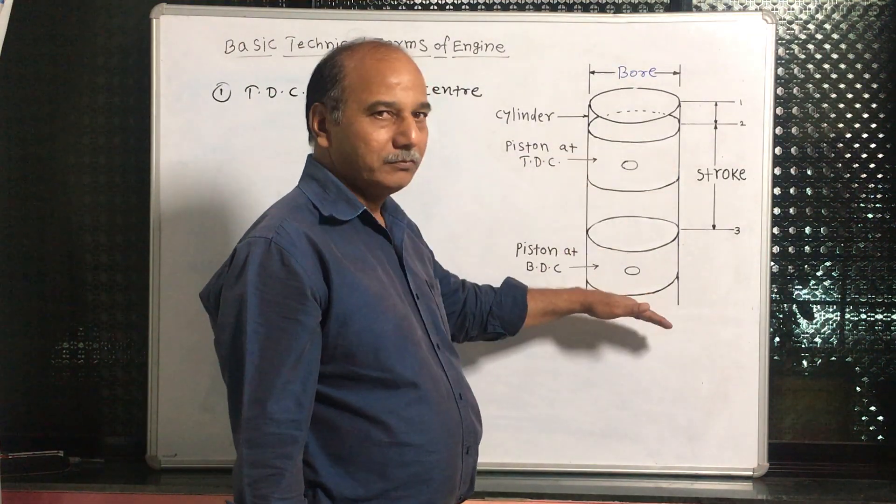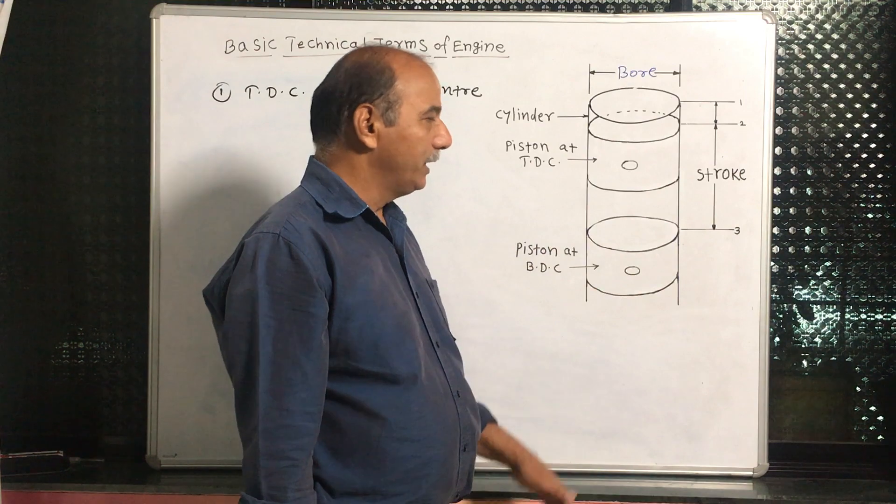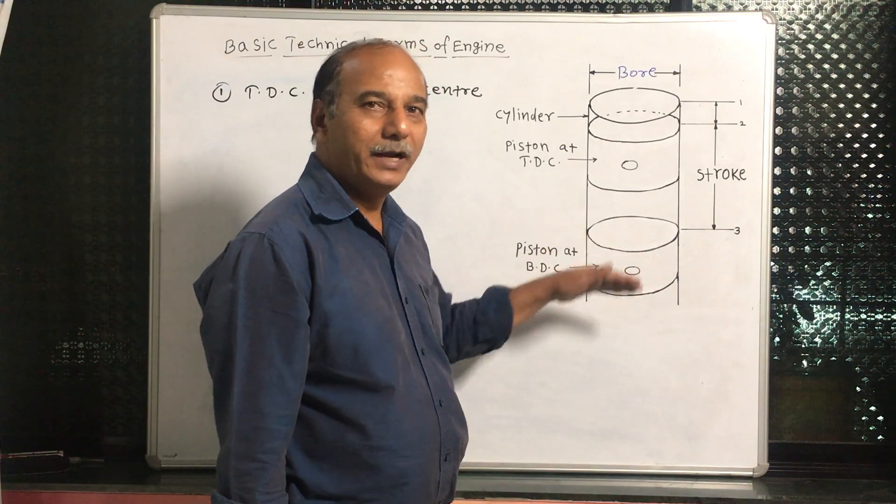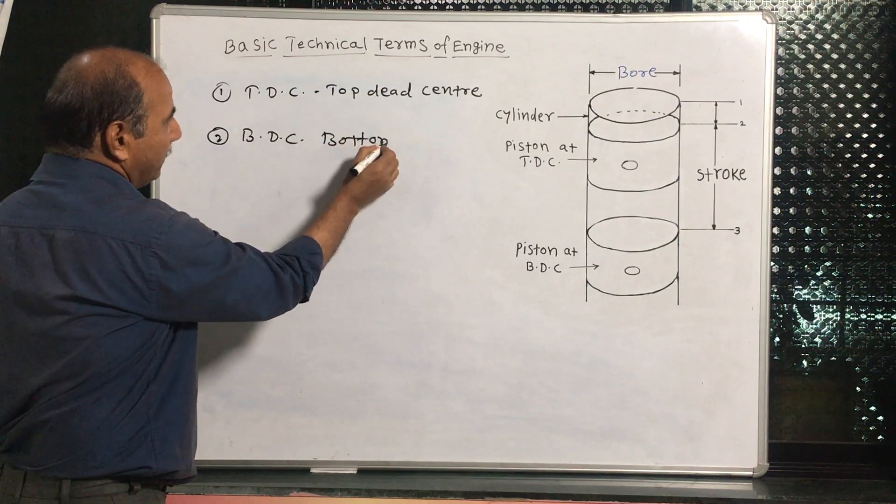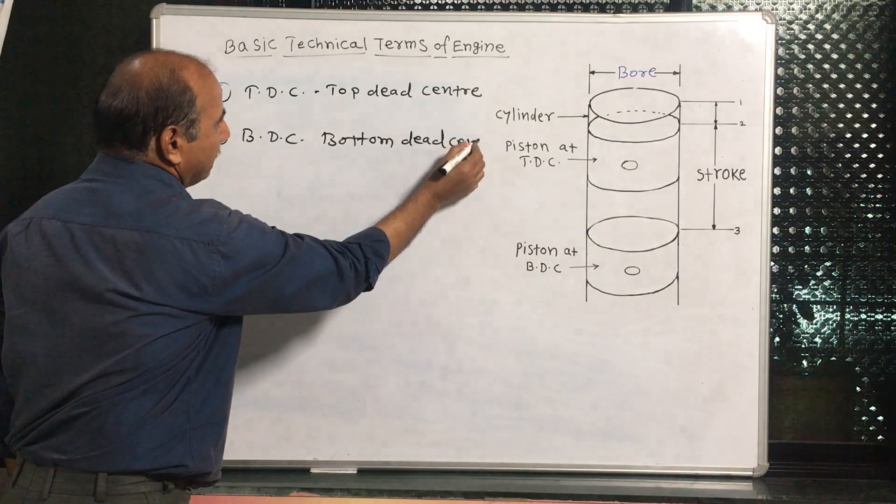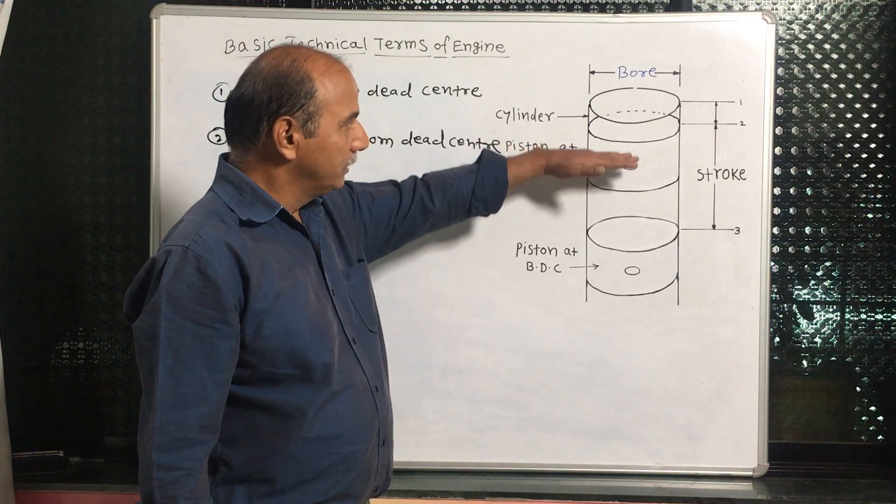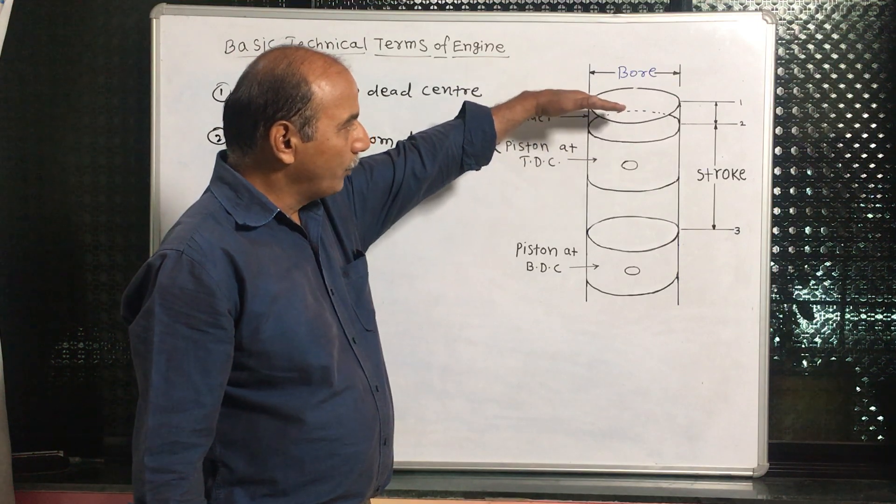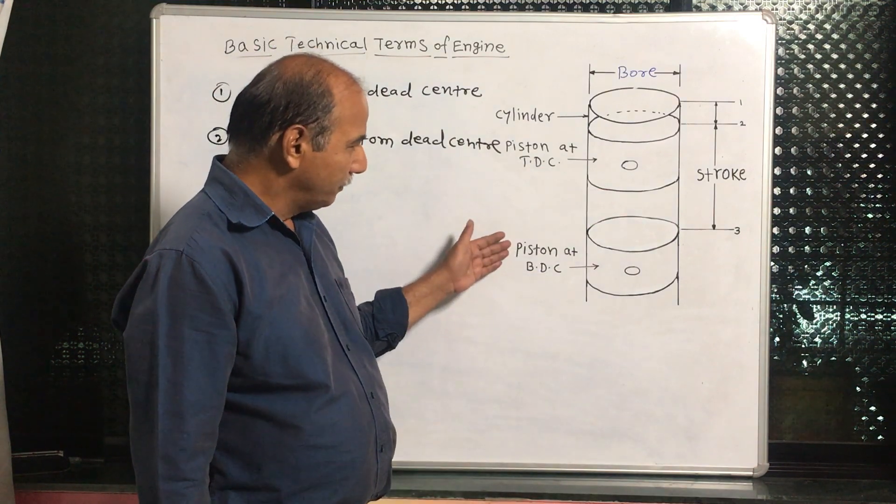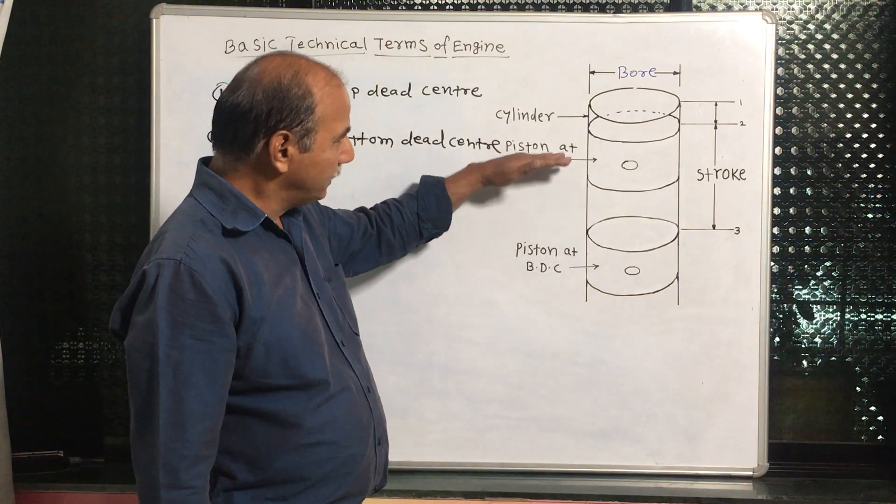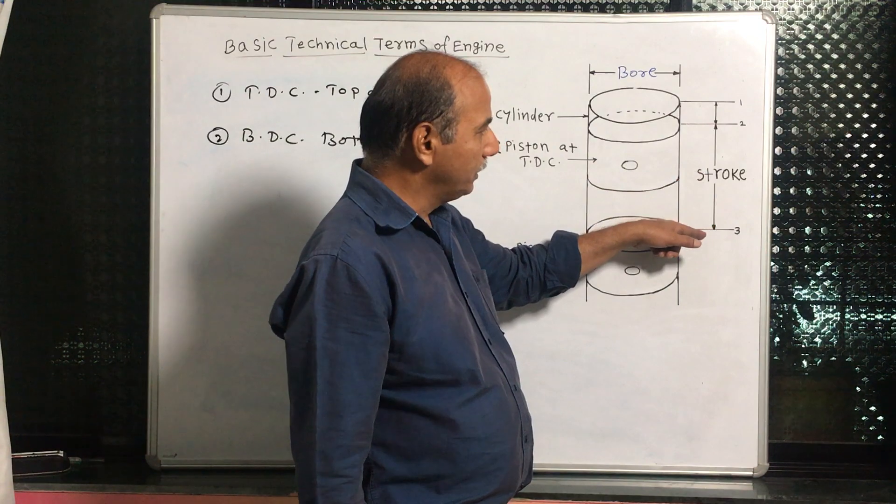Next point: when piston comes down, the upper portion of the piston comes down to the last point, the end point. That is BDC, bottom dead center. See, I have shown here already. This piston is at TDC. It is at the last point, and this piston at the upper portion of the last point of the bottom side, that we can say the piston at BDC. So, BDC and TDC: number two is TDC, number three is BDC.